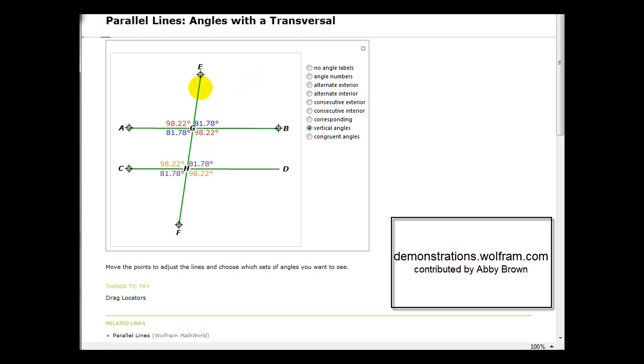Next, let's talk about alternate exterior angles. Here we see in red and in blue pairs of alternate exterior angles. And again, what you'll notice is they're equal in measure, regardless of the slant of the transversal or the slant of the parallel lines.